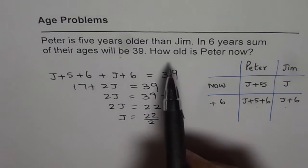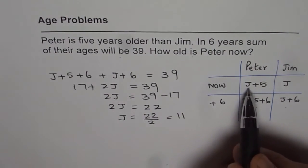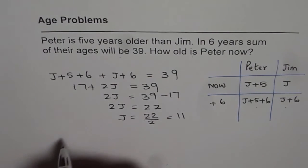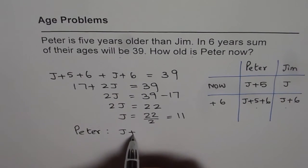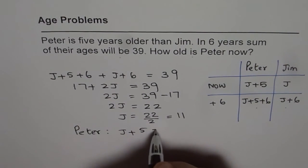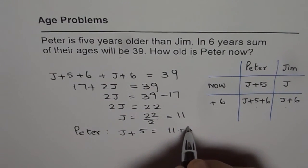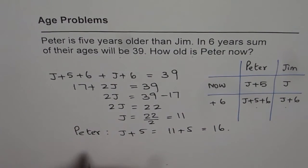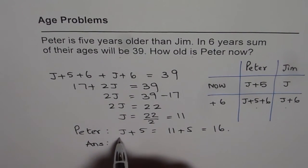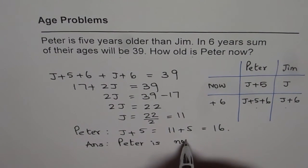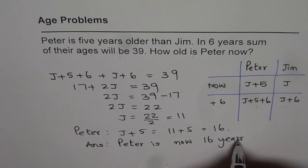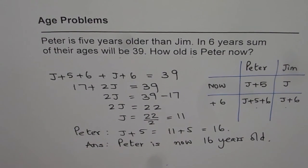The question is: how old is Peter now? Peter now is J plus 5. That means 11 plus 5, which is 16. Therefore, Peter is now 16 years old. That is how we can solve a word problem relating to age. Thank you.